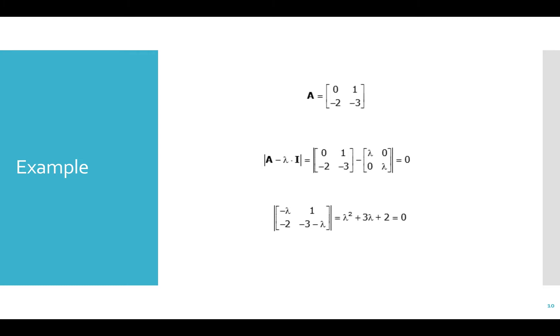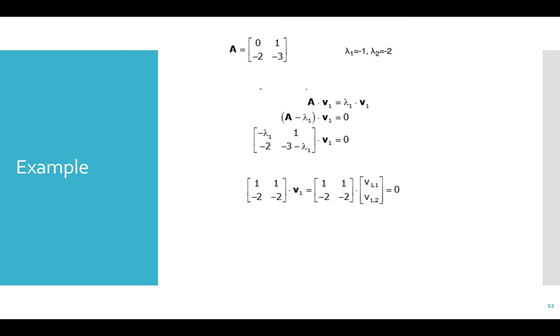This gives us a quadratic equation in terms of lambda. We can factor this or use the quadratic formula to find our two lambda values. Here we have lambda 1 equals negative 1 and lambda 2 equals negative 2. Now we need to plug these eigenvalues into the original equation, A v equals lambda v, to solve for v.